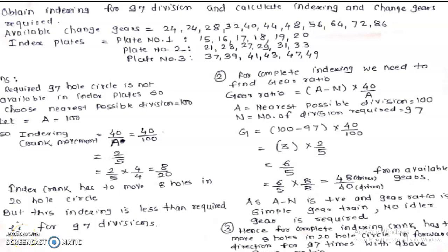Welcome friends. We will continue with differential indexing problems. Now the second example is given: obtain the indexing for 97 divisions and calculate the indexing and change gears required.